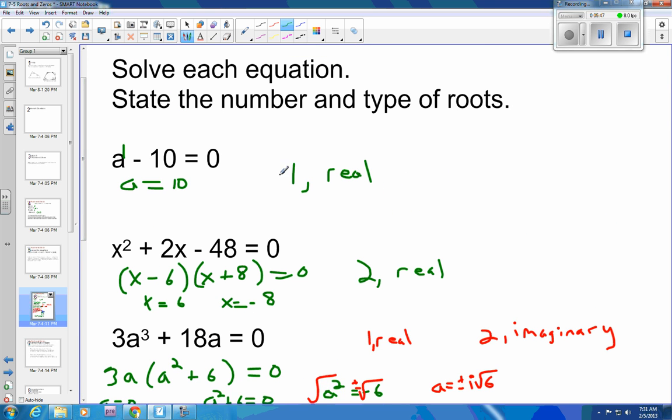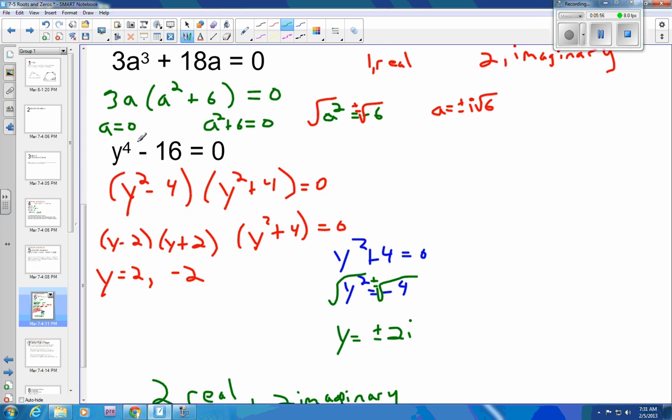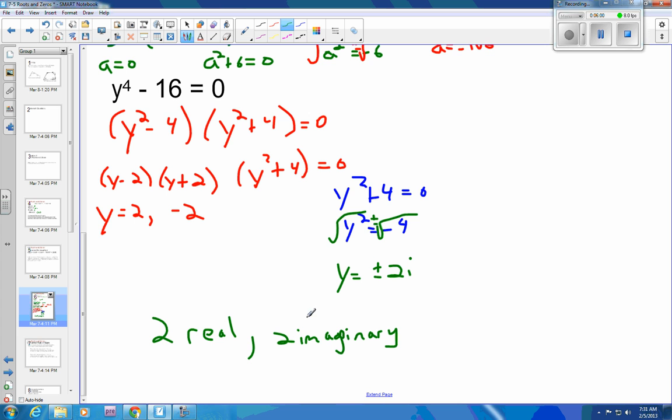So to the first degree, one root, to the second degree, two roots, to the third degree, one real two imaginary, that's a total of 3, to the fourth degree and we end up with two real two imaginary, that's four different functions here, four different roots.